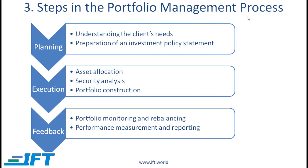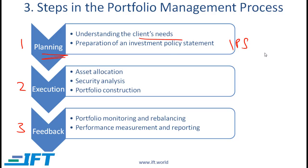Next, we come to the steps in the portfolio management process. There are three major steps: planning, execution, and feedback. In the planning phase, portfolio managers need to understand their client's needs and create an IPS, or investment policy statement. The IPS defines the client's needs, risk tolerance, liquidity needs, time horizon — whether short-term or long-term — return requirements given various constraints, and so on.